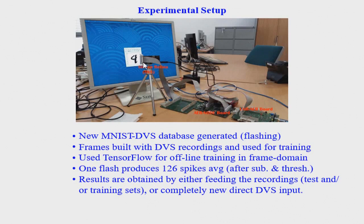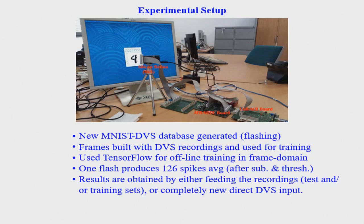The practical setup has a monitor flashing MNIST images, with a retina observing them. This goes through an FPGA-based processing board implementing the architecture described, then to another board communicating with a computer so we can see everything on screen live. The system is not trained in hardware — it is trained offline. We record the MNIST dataset by flashing all the digits, then build frames from these flashes in software and train using TensorFlow. The weights obtained are then used for convolution and maximum computation in the hardware.